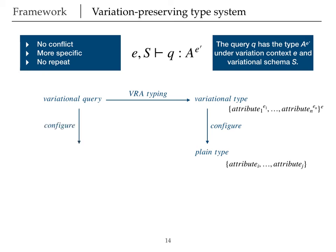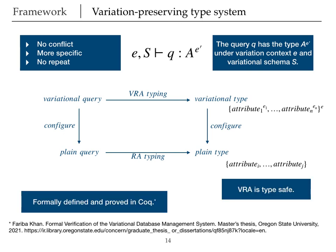Now, if I go from the other way around, if I configure my variational query under the same configuration, I should get a plain query. Now, if I get the type of this query under the relational algebra typing system, I should be getting the same plain type that I got when I took the first path. We formally define and prove this in Coq. And this variation preserving property allows us to use the type safety of relational algebra and prove that VRA is also type safe.